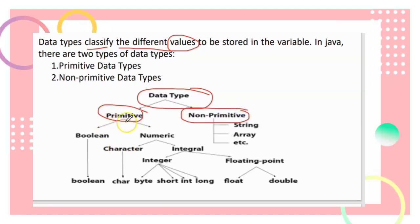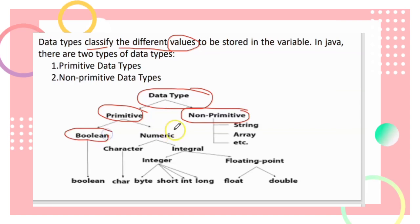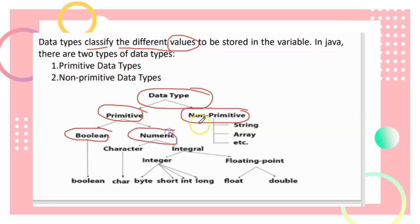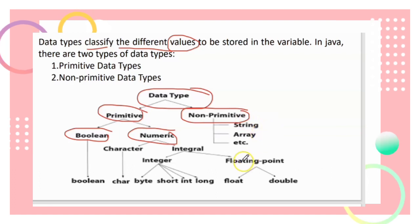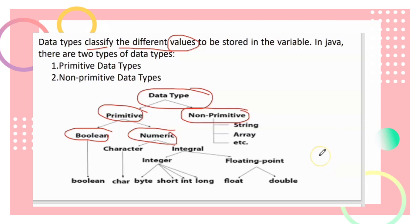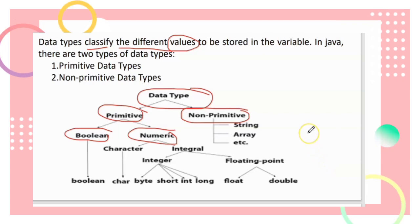For primitive data types, we have Boolean and numeric. For non-primitive, we have string and array. Later we will discuss further about these two types of data types.